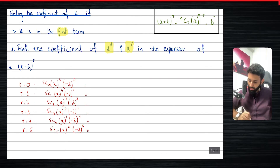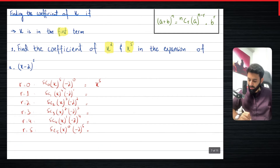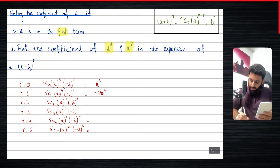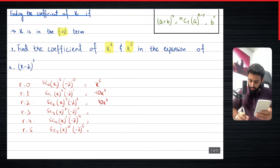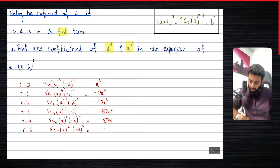Now let's write down these terms one by one. 5C0 is 1 and (−2)⁰ is 1, so the first term is x⁵. For r equals 1: 5C1 is 5, times (−2) is −10, so that's −10x⁴. Then 5C2 is 10, times (−2)² is 4, giving 40x³. Then 5C3 is 10, times (−2)³ is −8, giving −80x². Then 5C4 times 2⁴ equals 16, giving 80x. Finally, 5C5 is 1, (−2)⁵ is −32, giving −32.